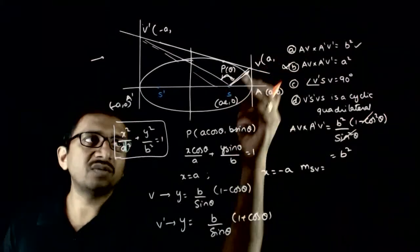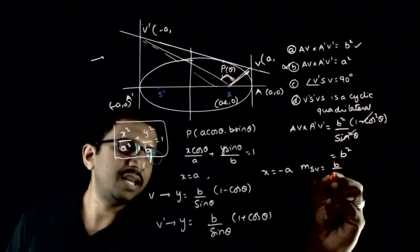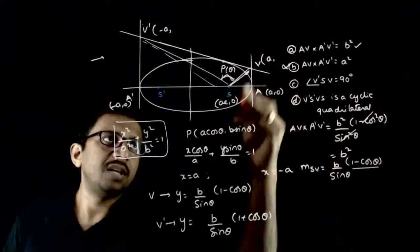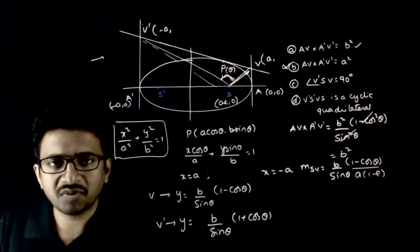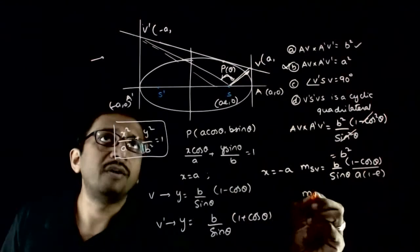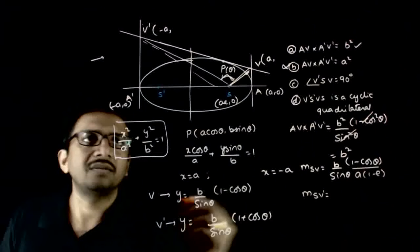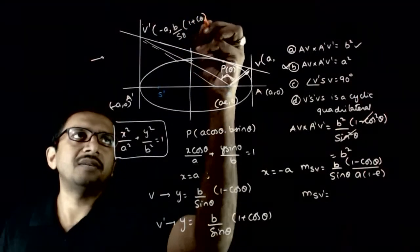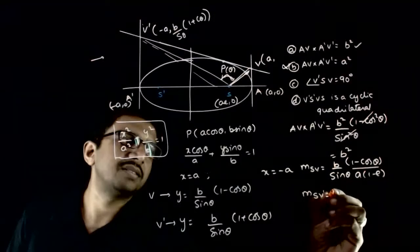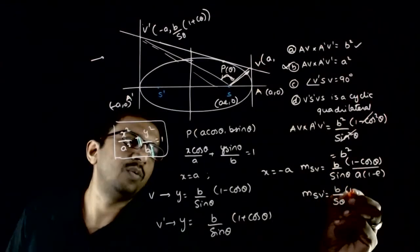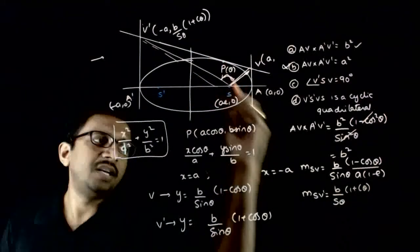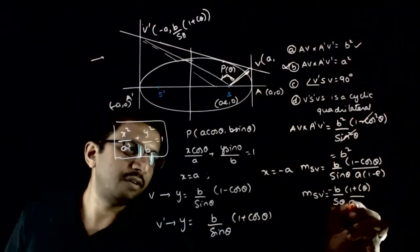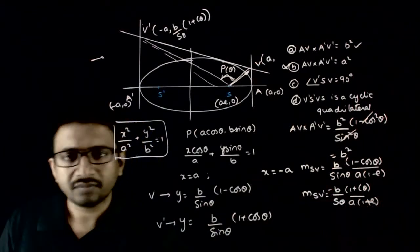Computing slope of SV: y₂ − y₁ over x₂ − x₁ gives (b / sinθ)(1 − cosθ) over a(1 − e). Similarly, the slope of SV dash is (b / sinθ)(1 + cosθ) over −a(1 + e).